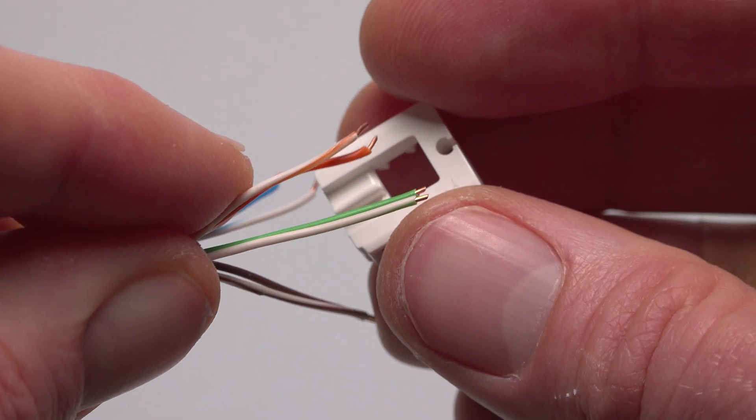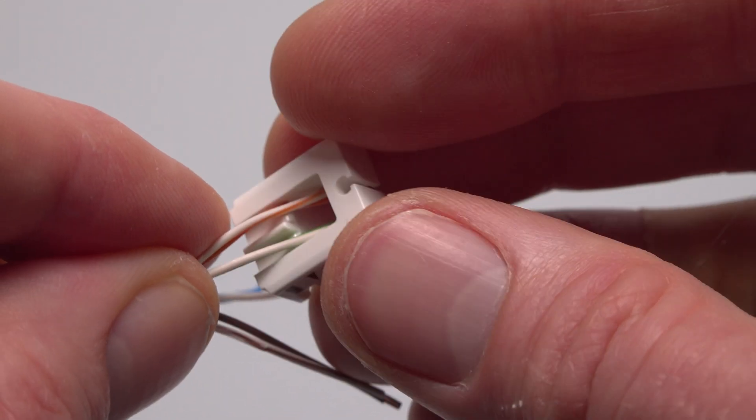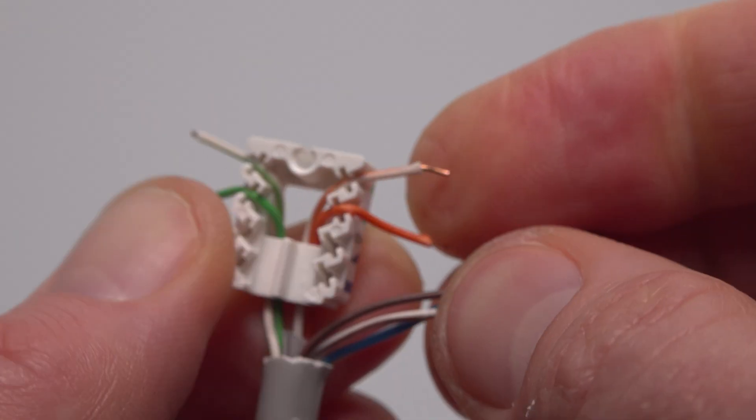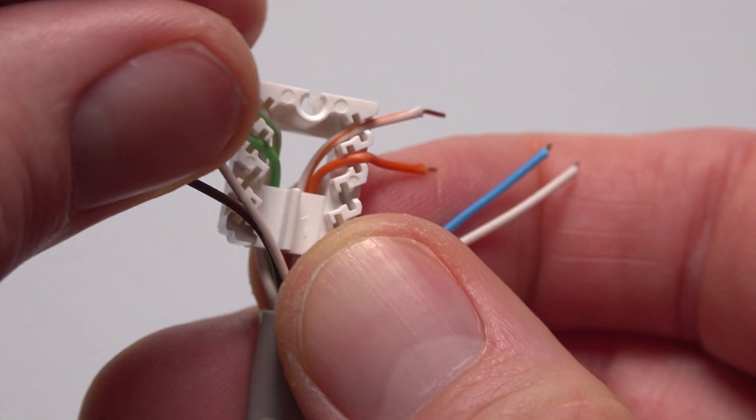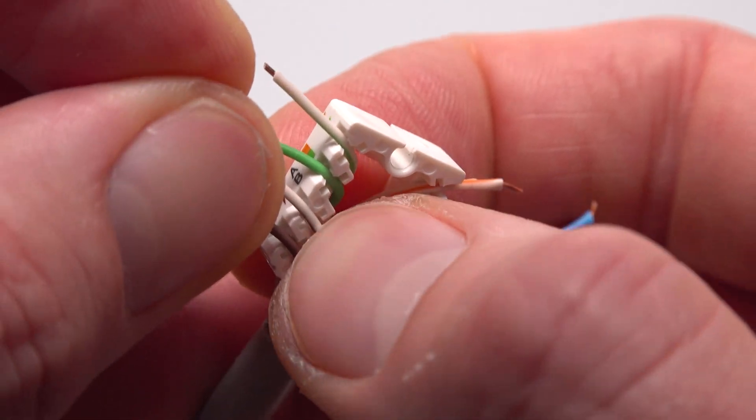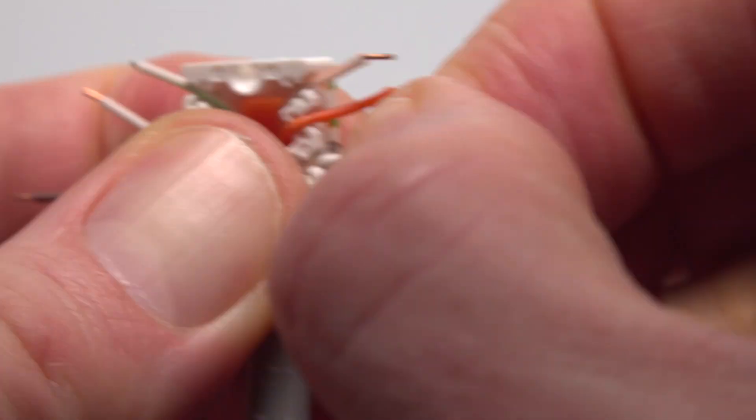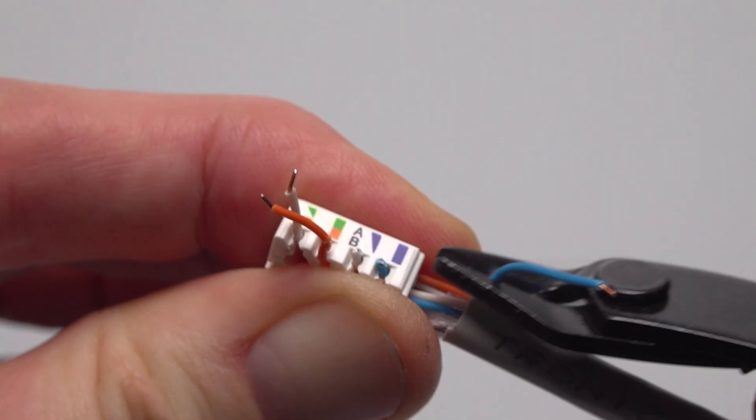Pinch all eight wires into their correct color coded places inside the connector cap threading the oranges and greens round the back and the browns and the blues round the front. Make sure the connector cap is as close to the end of the outer jacket as possible to minimize the length of untwisted wires before they enter but still leaving enough of a gap to allow the top cap to close properly.